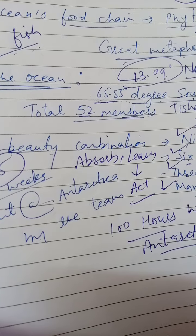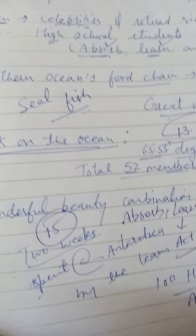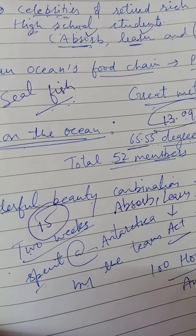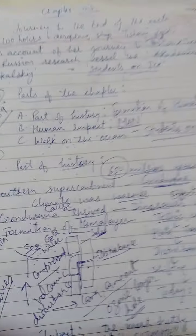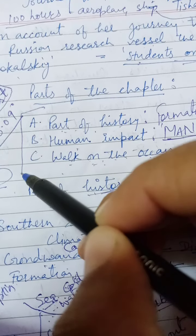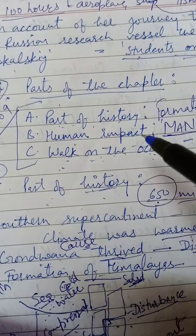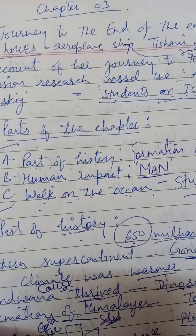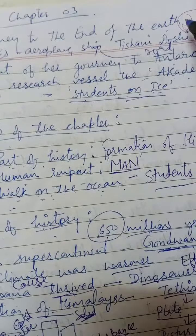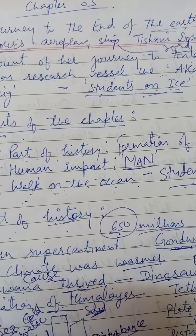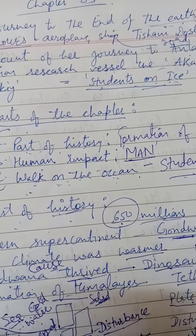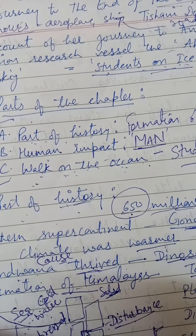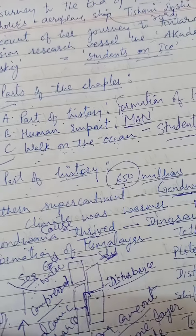This is the outline of the chapter. After this overview, we will read the chapter thoroughly. The key takeaway is that all three parts of this chapter arrive at one conclusion: we should protect our earth from all kinds of harmful effects. This chapter also tells us about the last part of the world — Antarctica. In the next video we will study the chapter in detail. Till then, take care, goodbye.